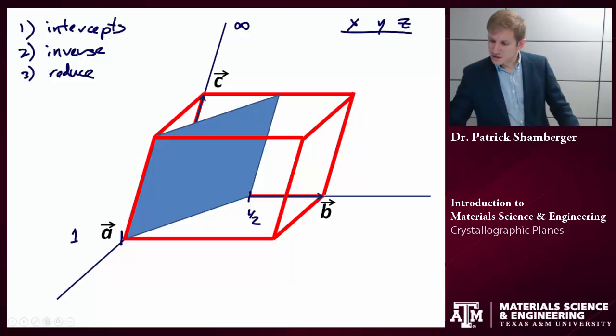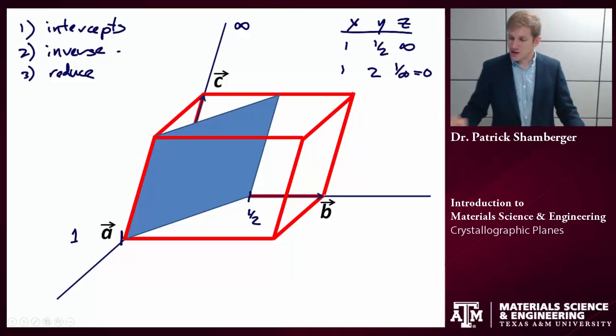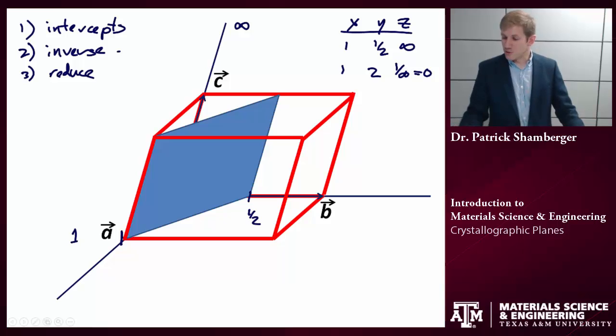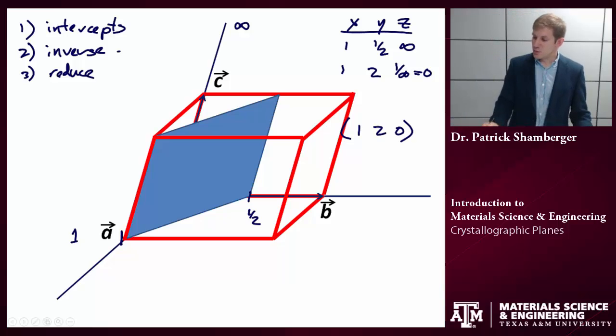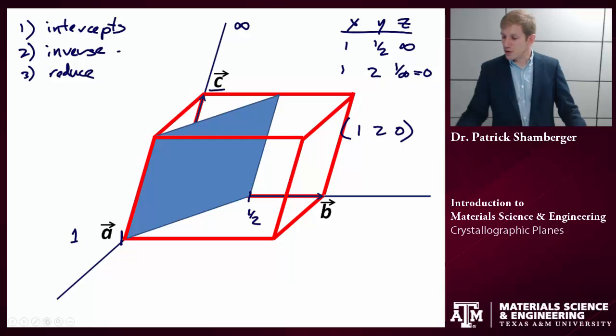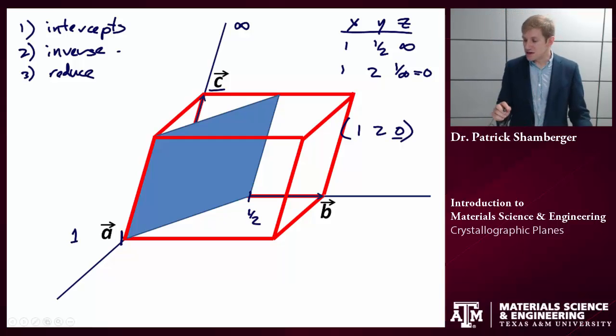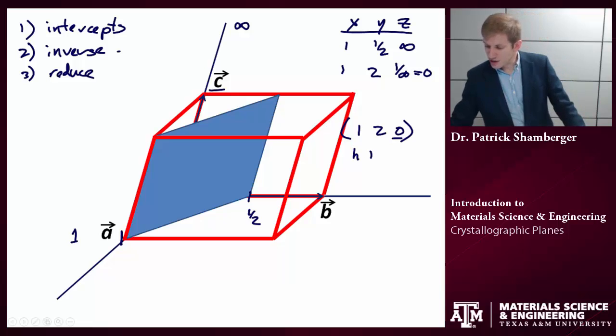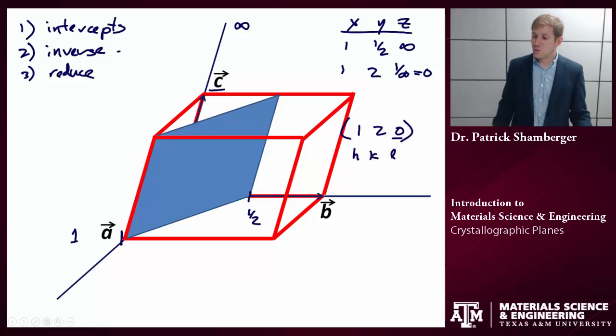So in my table, x, y, z, the intercepts are one, one half, infinity. I'm going to take the inverse of these. That's the next step: one. One over one half is two. One over infinity equals zero. One divided by an infinitely large number is zero. I would then reduce, but I notice I'm already using integers only. So I'm all set. The indices of this plane are (1 2 0) using the Miller notation. So note, if I'm parallel to the C plane, my C index is zero. These are actually usually called h, k, l indices. So the l index would be zero.